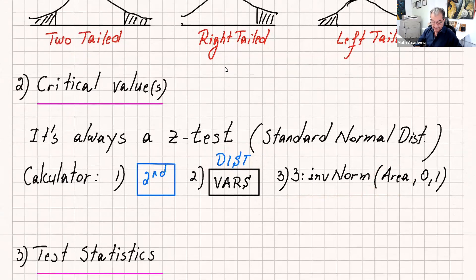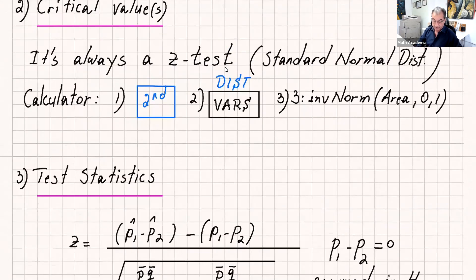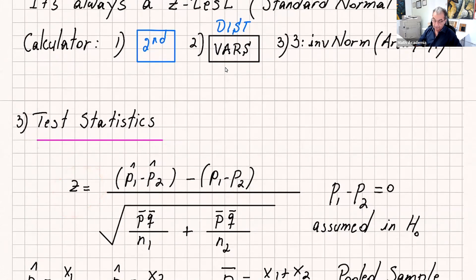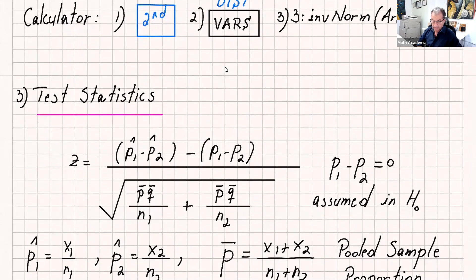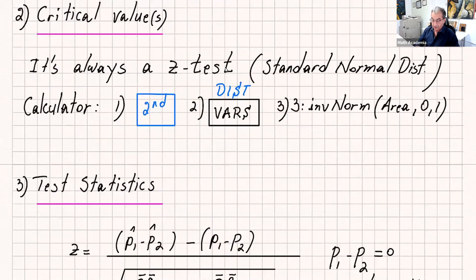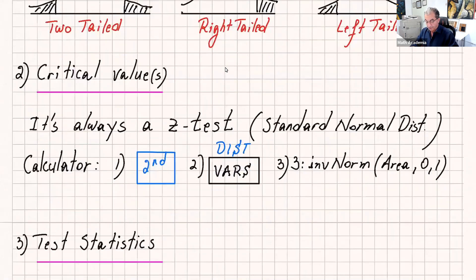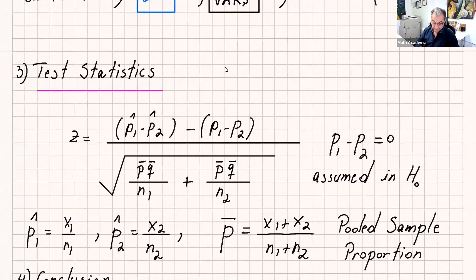I'll show that to you once I go over an example. Once you're done with the critical values, then it's the test statistic. The test statistic is a z-test and it uses a formula that's a little bit different. The formula is: p-hat-1 minus p-hat-2 minus (p1 minus p2), over the square root of p-bar times q-bar over n1, plus p-bar times q-bar over n2. The quantity p1 minus p2 is always zero — it's assumed in H0 — so when we write the formula we assume it's always zero.